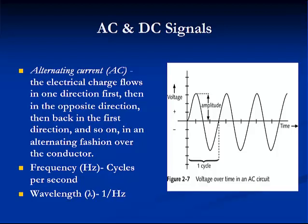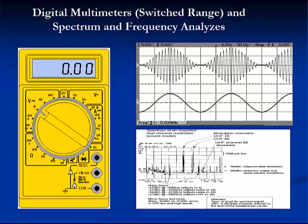In a circuit, voltage is measured by a voltmeter, current is measured by an ammeter, and resistance is measured by an ohmmeter. A device that can measure all three of these variables is called a multimeter. An oscilloscope measures the change in voltage over time or oscillation on an AC circuit. A frequency analyzer converts the time domain into a frequency domain for its type of display.